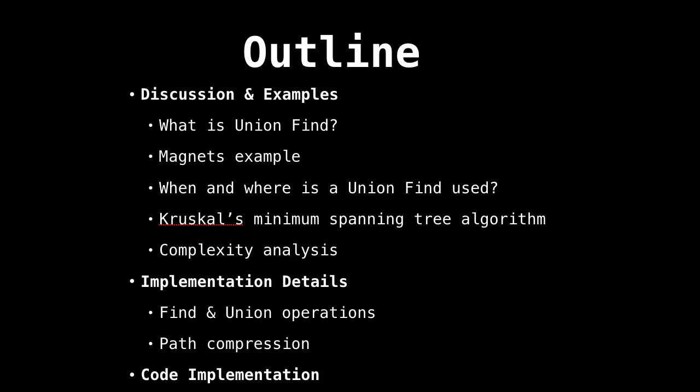So an outline of things we'll be covering about the union find: first I'll be going over a motivating example — magnets — just to illustrate how useful the union find can be. Then we'll go over a classic example of an algorithm which uses the union find, specifically Kruskal's minimum spanning tree algorithm, which is very elegant. Then we're going to go into some detail concerning the find and union operations, the two core operations the union find uses. And finally, we'll have a look at path compression, which gives us the really nice amortized constant time the union find provides.